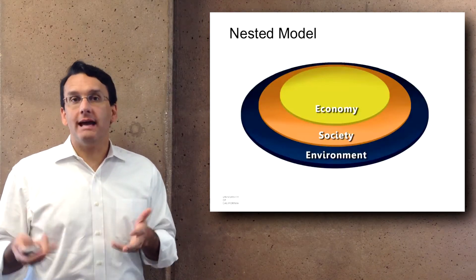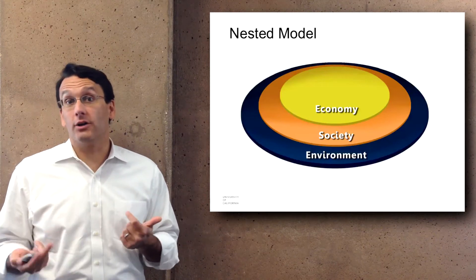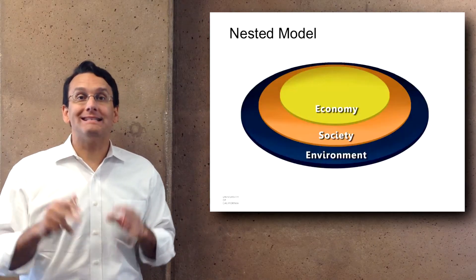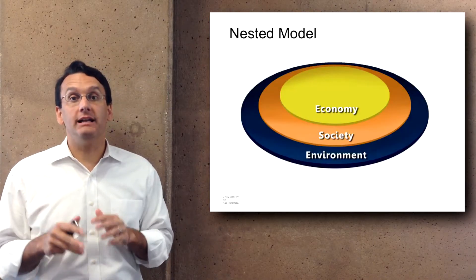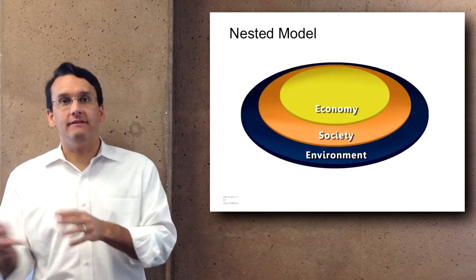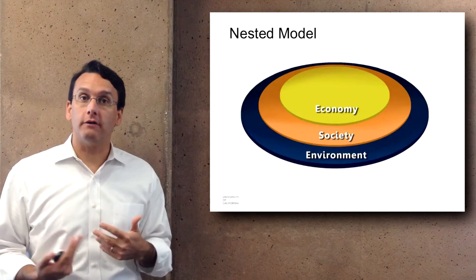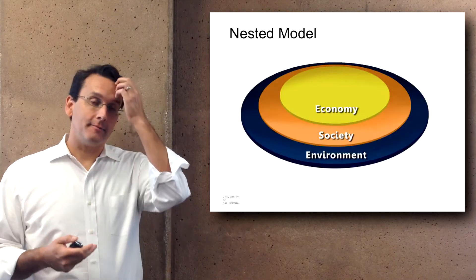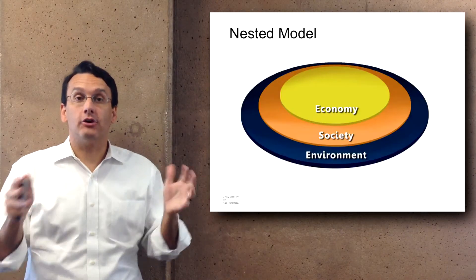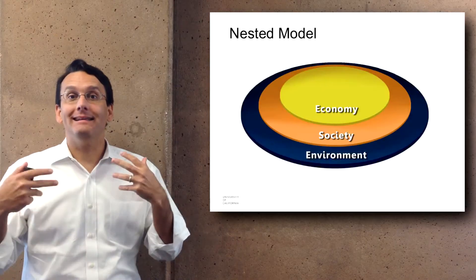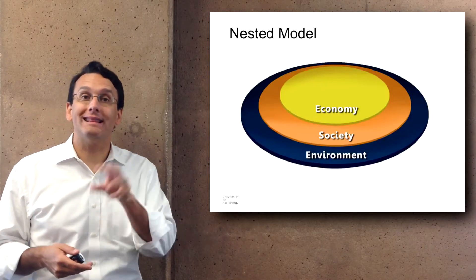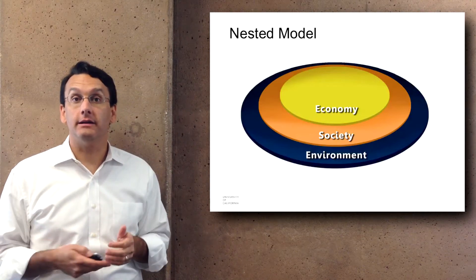However, there is some contention about whether the three-legged stool is the best model. One that I prefer is a nested model where economy is inside society, and society is inside the environment — going back to the question of whether humans and the environment are separate or whether humans are part of the environment. In this model the environment is the entire world, within that are human societies, and within that the economy is just a subset of human societies.